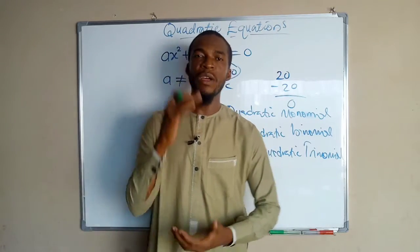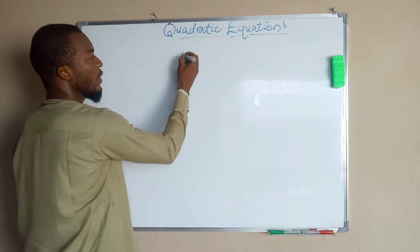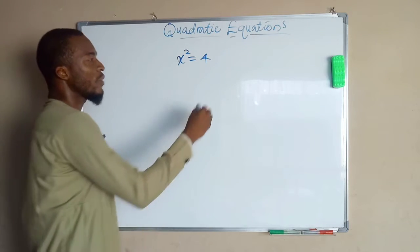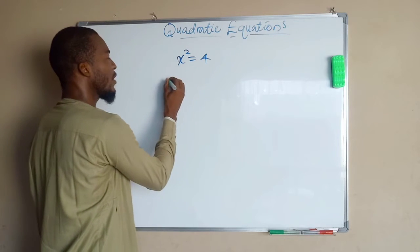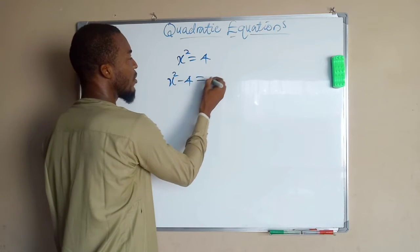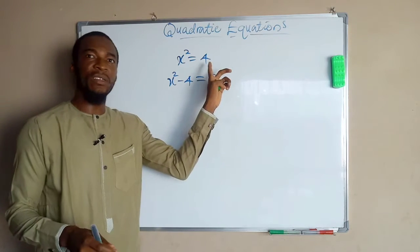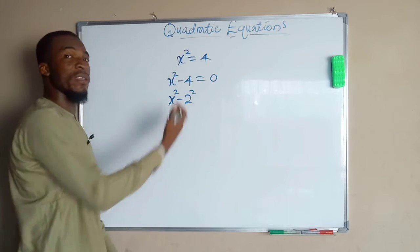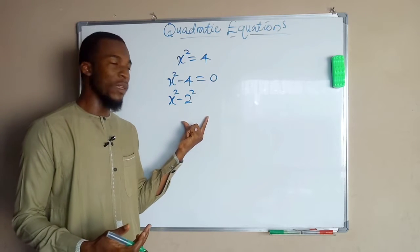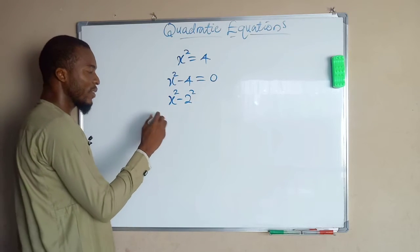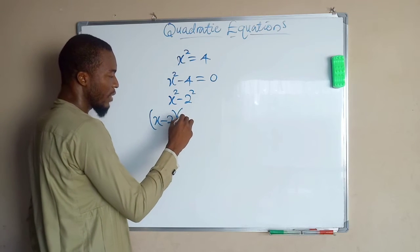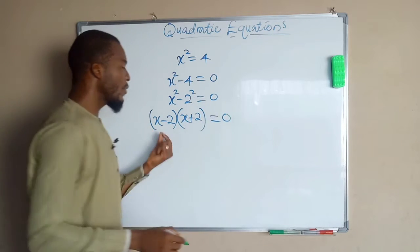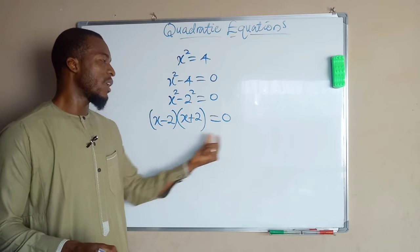Now let us see how we can solve quadratic equations by factorization. Suppose we have x squared equals 4. We subtract 4 from both sides so that we have x squared minus 4 equals 0. This can also be written as x squared minus 2 squared, which is a difference of two squares. We can factorize this as x minus 2 multiplied by x plus 2 equals 0, where we have two factors multiplying each other and the result is 0.